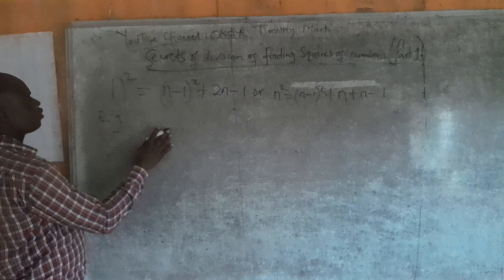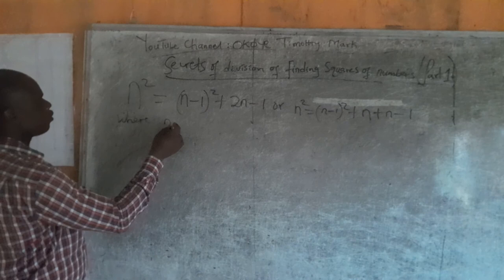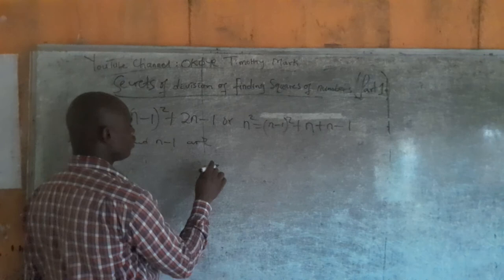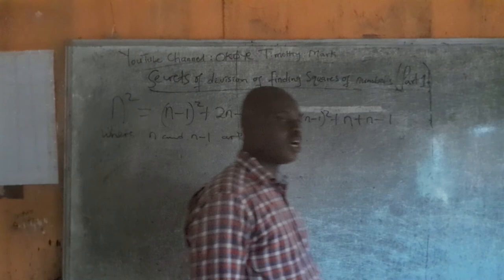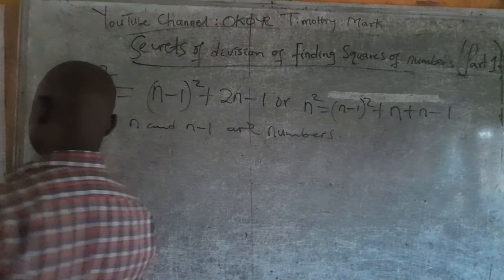I found out that n² plus n plus 1 and n minus 1 are numbers. Be it all numbers or not. Preferably, all numbers.